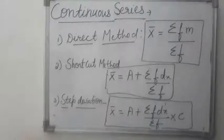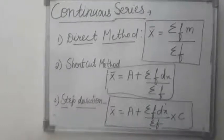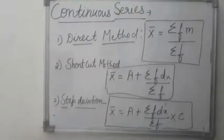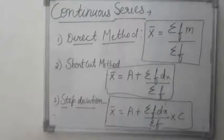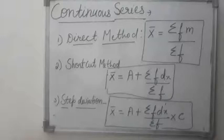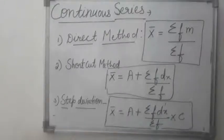Continuous series is also called frequency distribution series. In continuous series, items are classified into different class intervals. There are 3 methods of calculating the mean in continuous series, and the process is the same as we read in the discrete series.